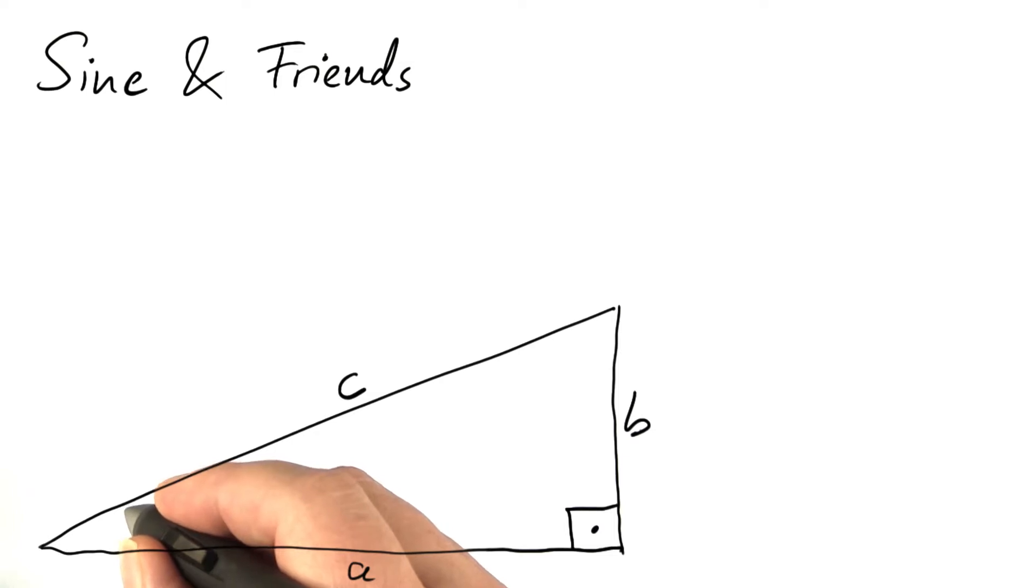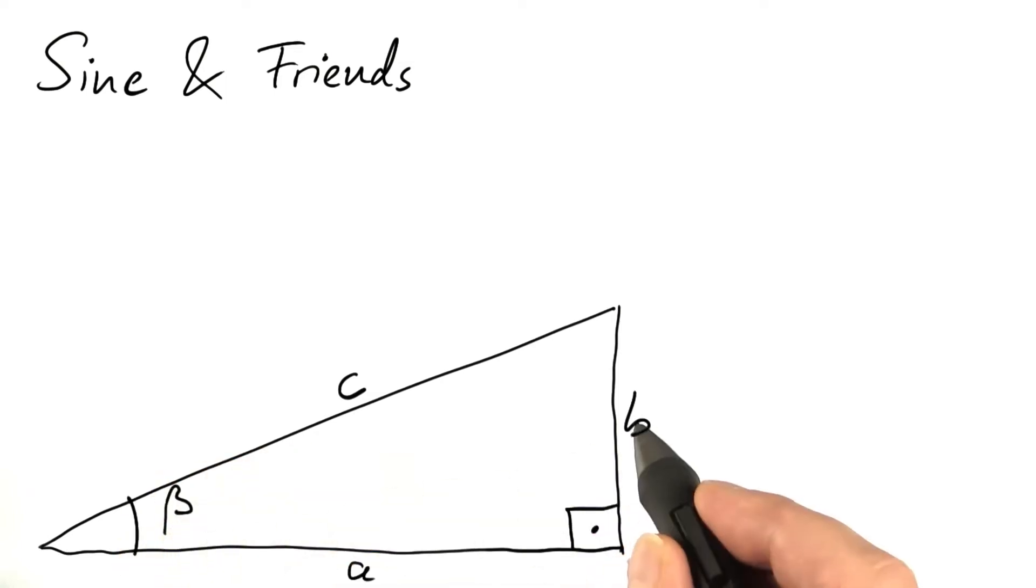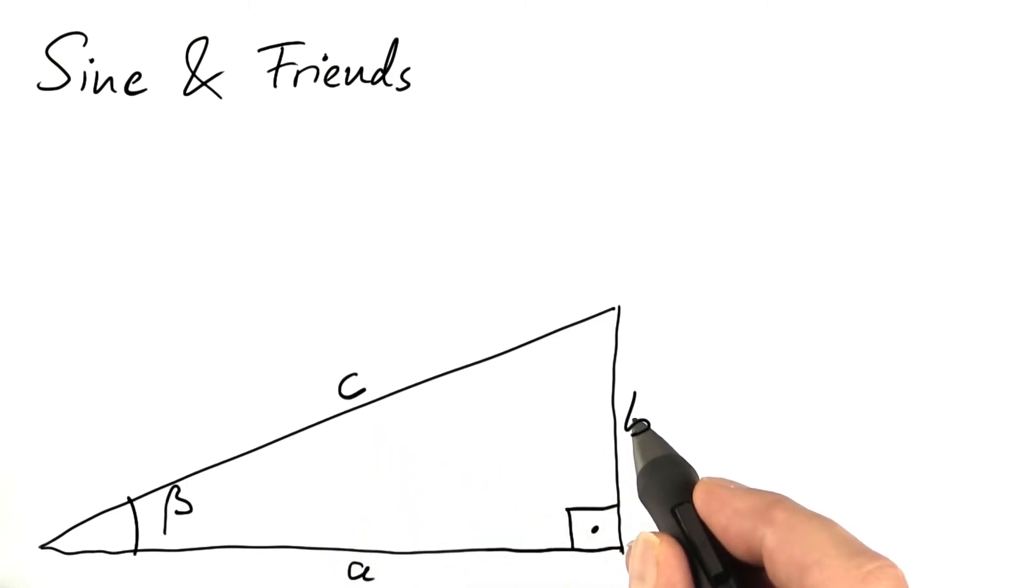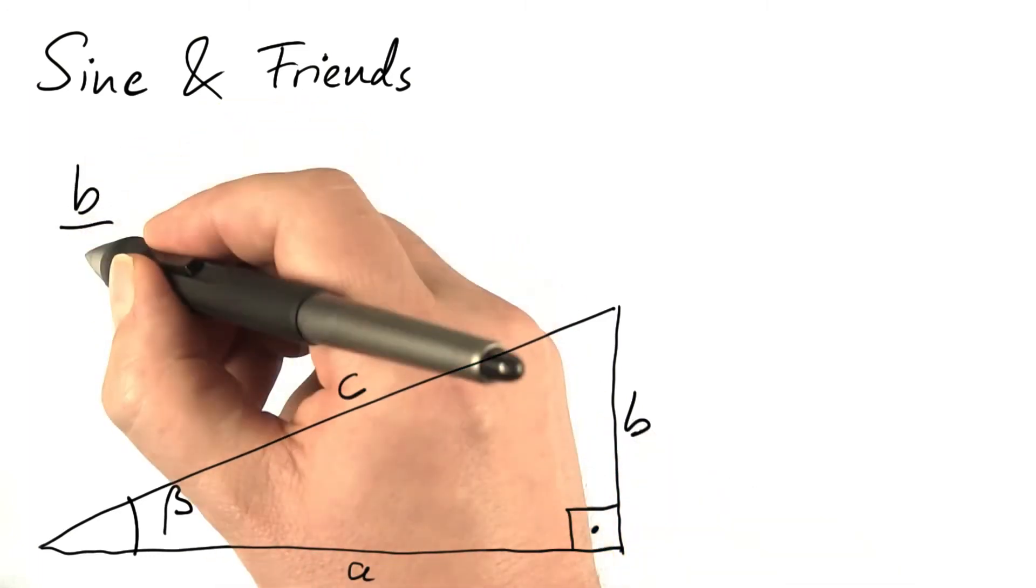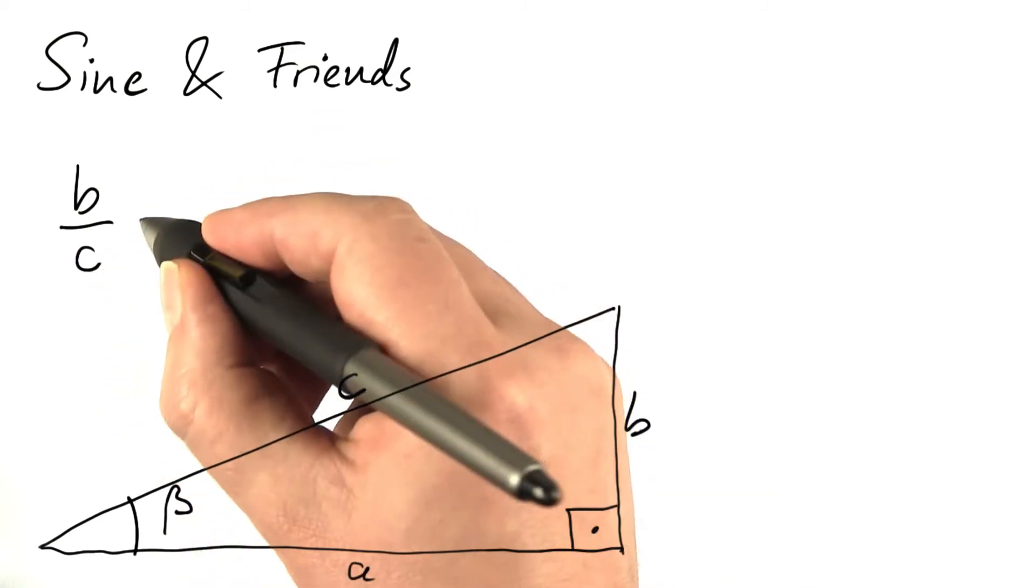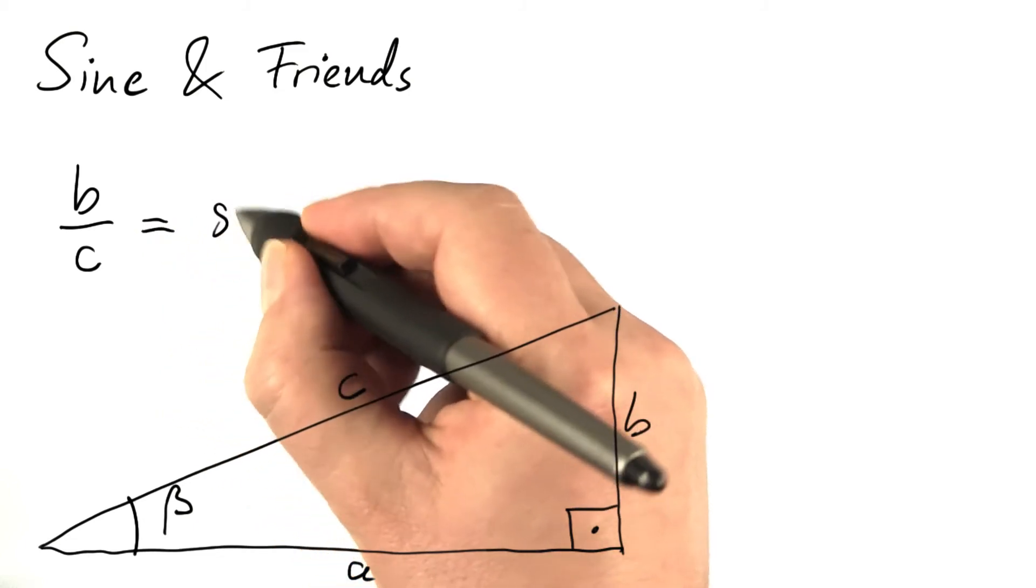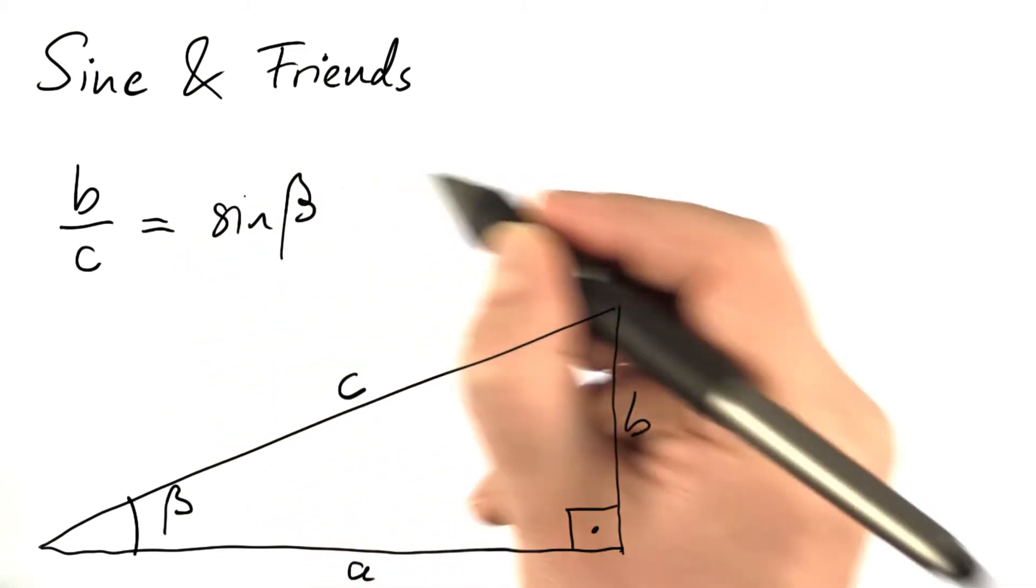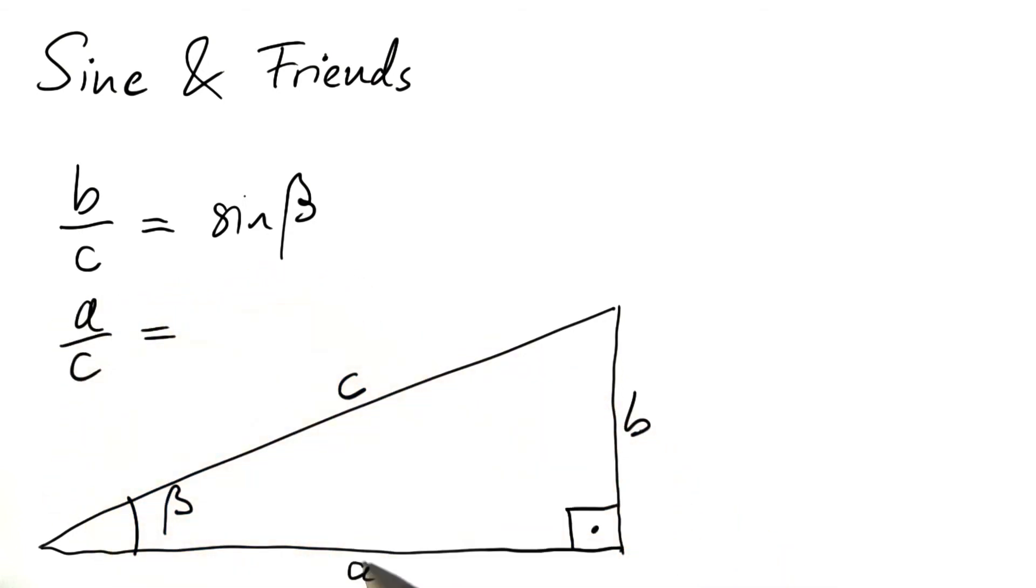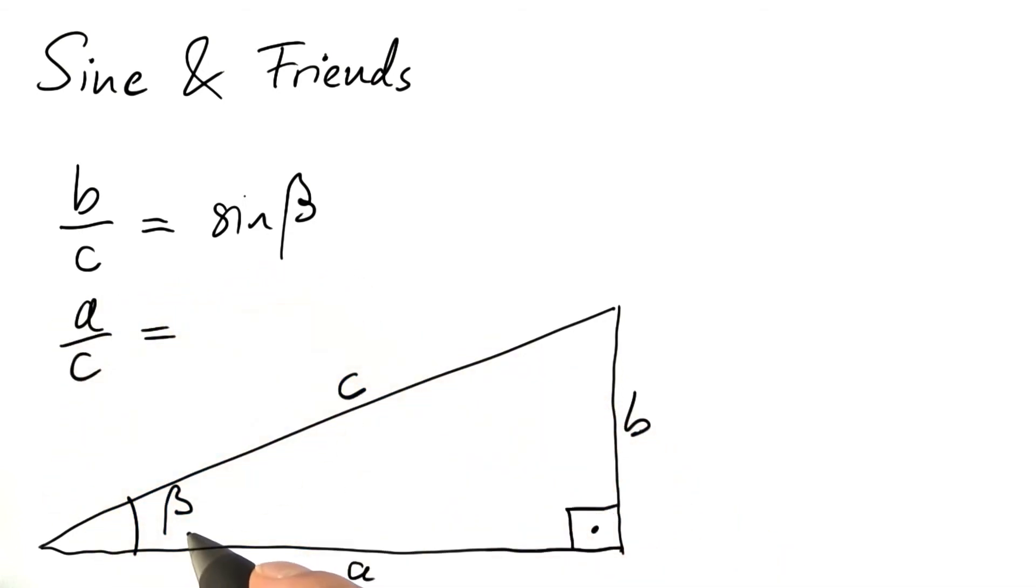And I'm interested in that angle, which I call beta. Once this angle is specified, the ratio of every two of these sides is fixed. For instance, B divided by C is fixed once beta is given. That's called the sine of beta. And A divided by C is given once beta is known. That's the cosine.